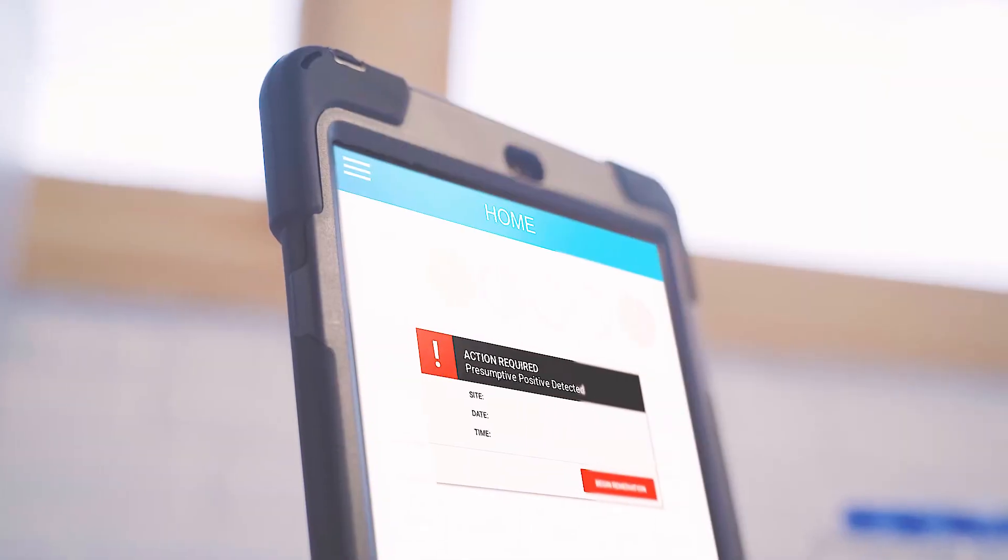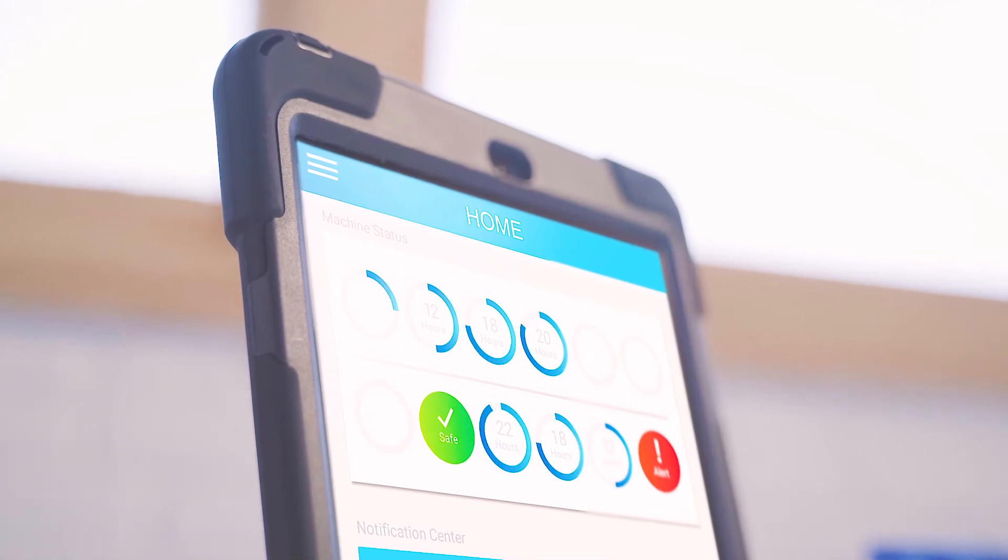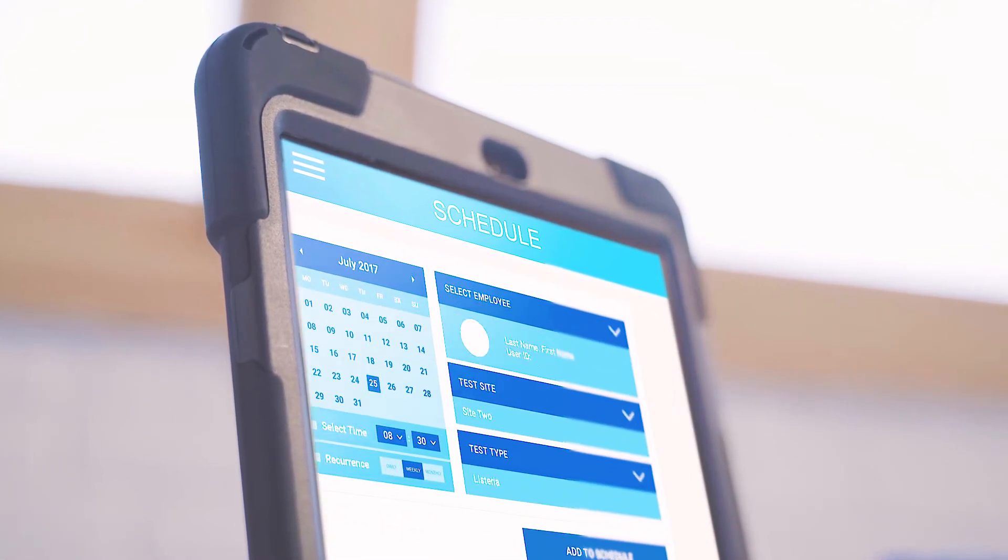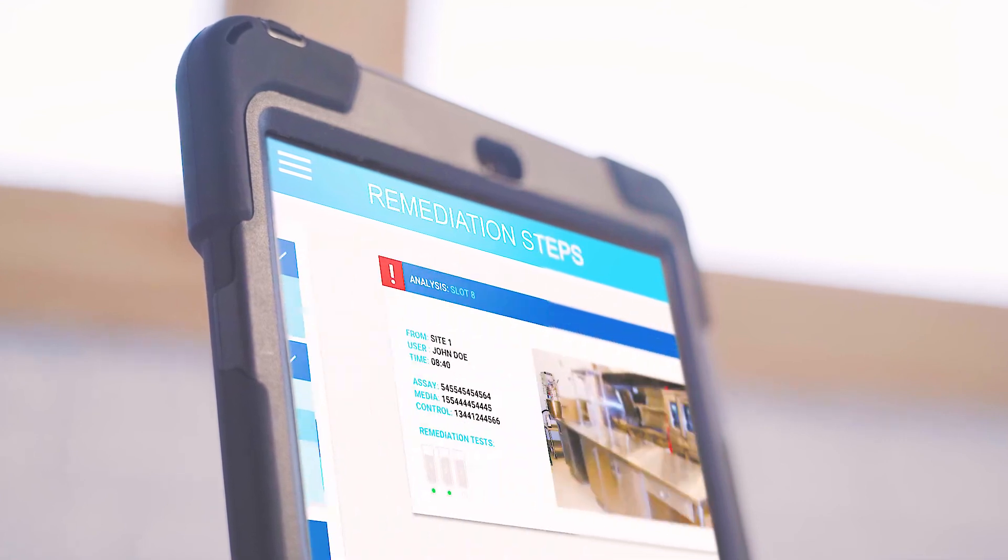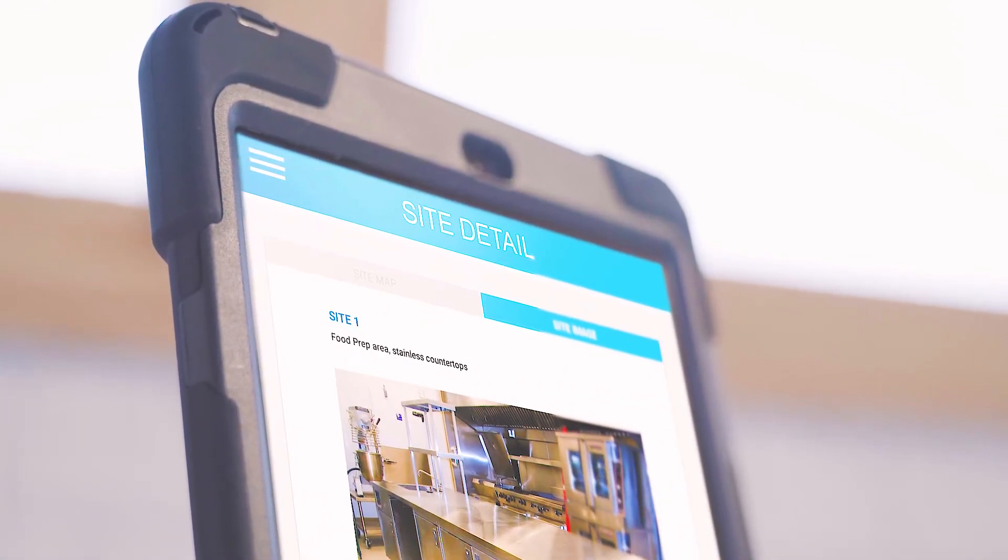The control pad prompts critical sanitation remediation steps, while the presumptive positive sample can be sent for external lab confirmation testing. Facility management software features include scheduling, mapping, trend plotting and remediation management.